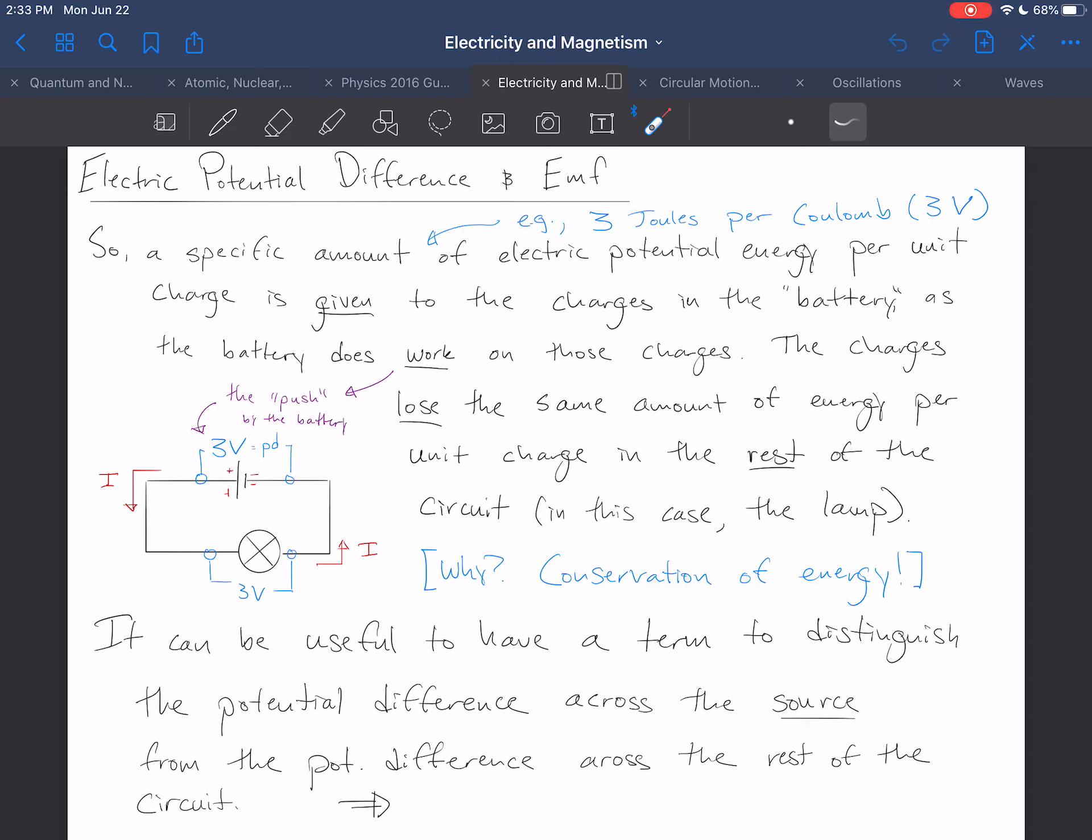Now, those charges then go through the circuit, and they lose the same amount of energy per unit charge in the rest of the circuit. So, they're given a certain amount of energy here, and then they lose that amount of energy here. In this case, the lamp. Why is that? Well, that's due to the conservation of energy.